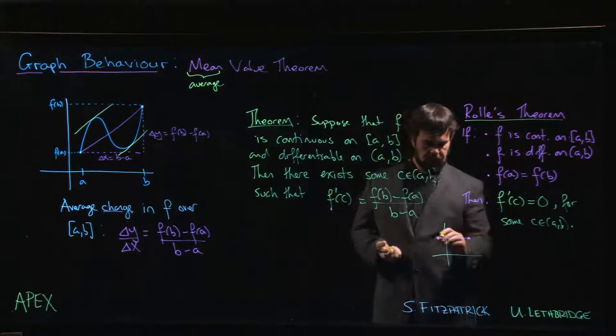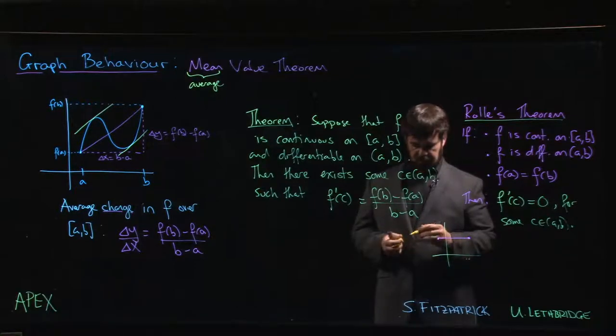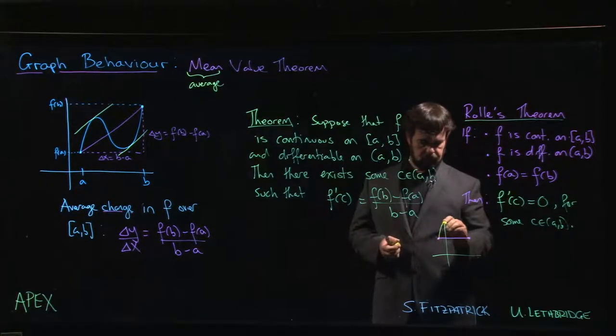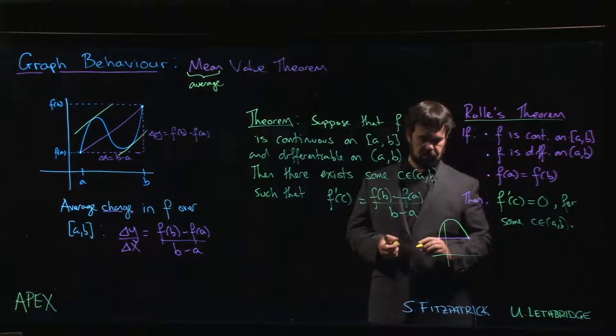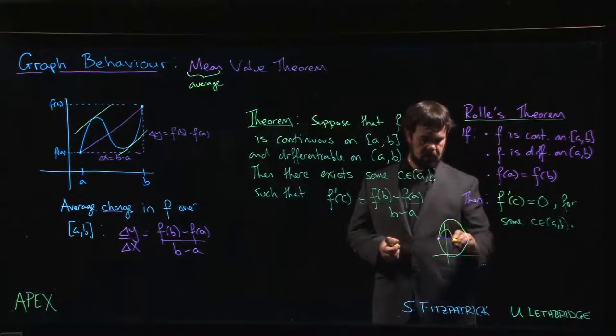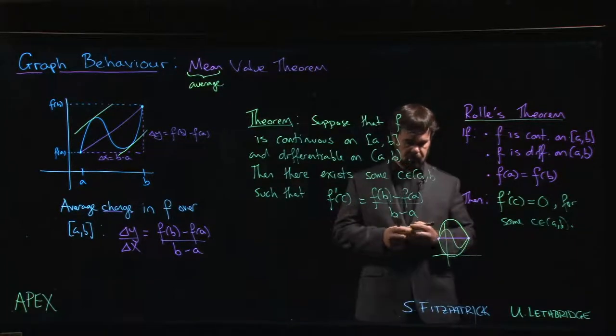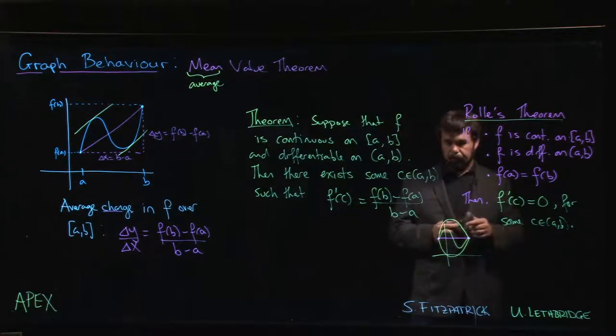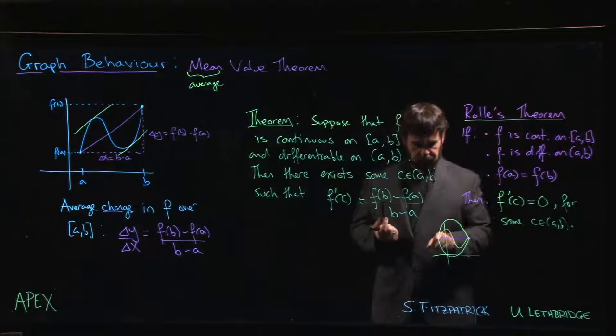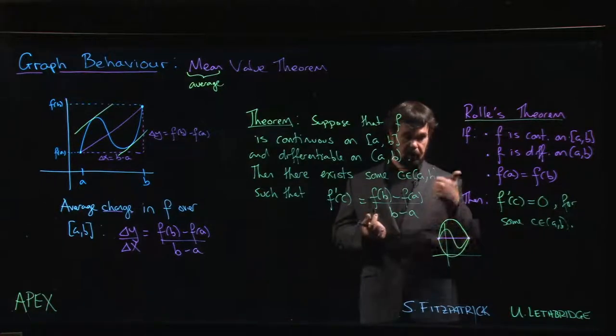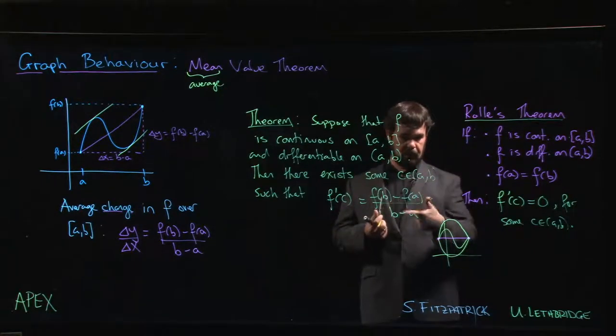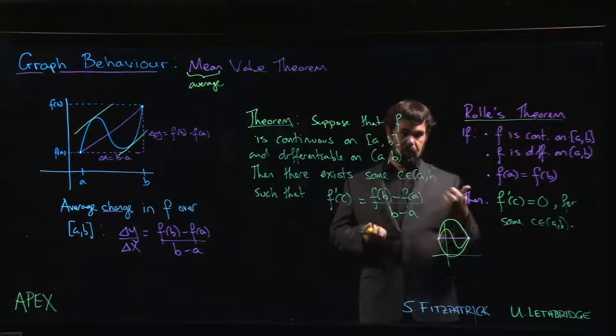So maybe you have a graph that looks like this, or like this, or maybe it does this. Whatever the case, you know that at most one of the absolute max or the absolute min can occur at the endpoint.